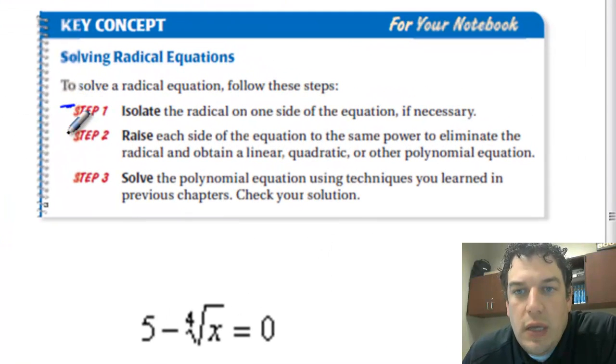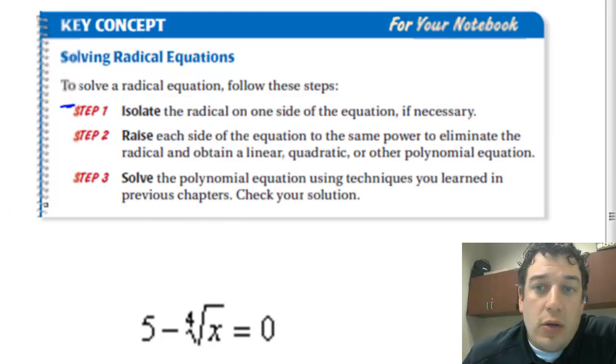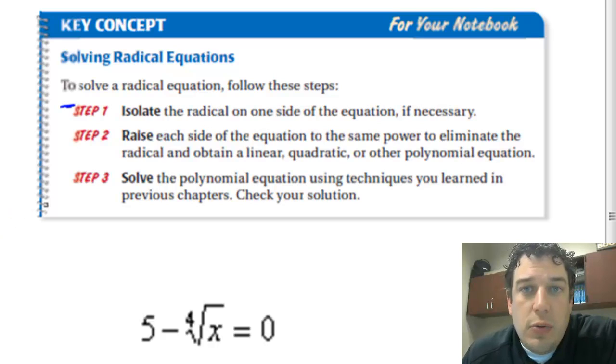Step one is to isolate the radical on one side of the equation if necessary. We're going to get into some situations where we're going to have radicals on both sides, but we'll talk about that in a little bit.